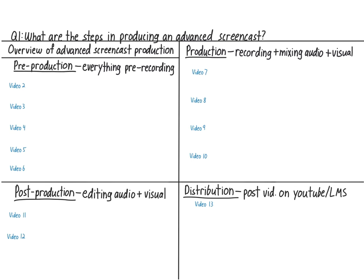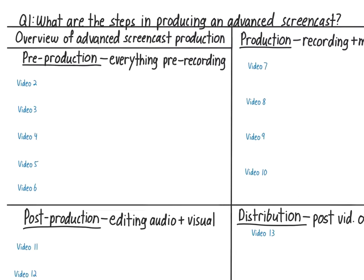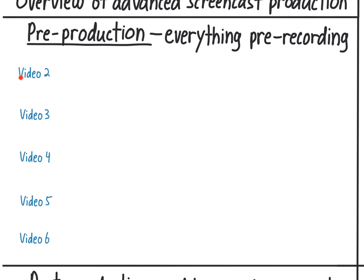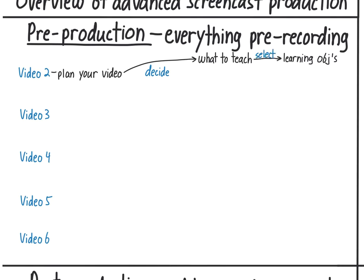First, we'll examine pre-production, which generally takes the longest. Video 2 will show you how to plan your video. The first step is to decide what to teach by selecting your learning objectives. College professors will have more freedom here than teachers of younger students, but I recommend taking a good, hard look at what you're teaching and why.